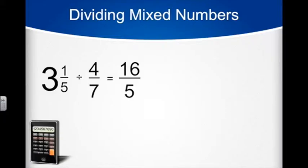We also need to take the reciprocal of 4 7ths to rewrite the division as multiplication. Now we just need to reduce and multiply 16 5ths times 7 4ths.